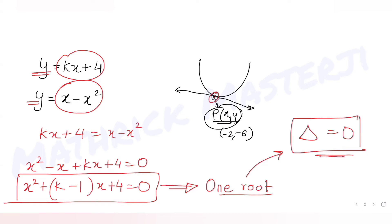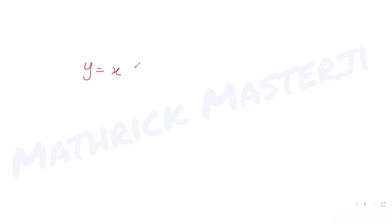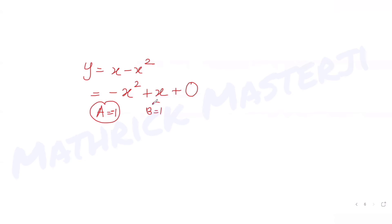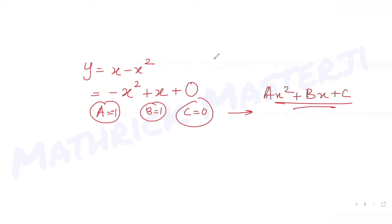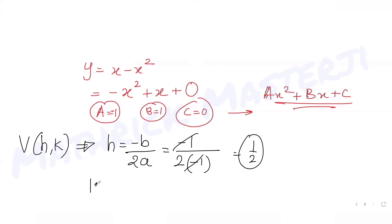Now let's find the vertex V of the parabola y = x minus x squared, written in standard form as -x squared + x + 0. Comparing with ax squared + bx + c, we get a = -1, b = 1, c = 0. The x-coordinate of the vertex is h = -b over 2a = -1 over (2 times -1) = 1/2.